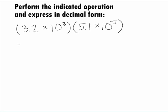In this example, we want to multiply 3.2 times 10 to the 3rd times 5.1 times 10 to the negative 5.